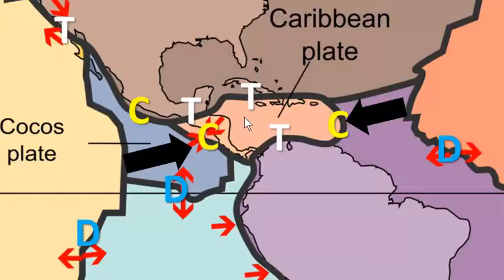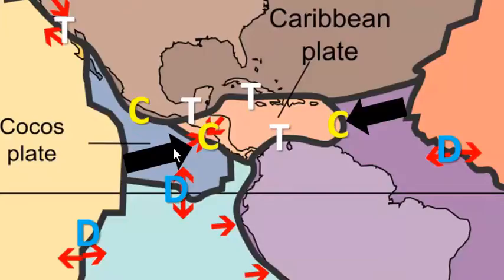In the case of the Caribbean and Central American regions, we've got essentially squeezing happening on both sides of the region. We can see that in the two solid black arrows coming towards each other. So essentially what's happening is the Caribbean plate is getting squished, with an oceanic plate on both sides going underneath, for the most part, a continental plate.